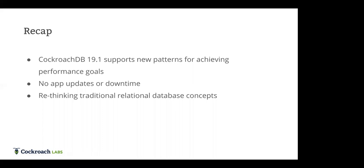To recap: with CockroachDB we have many different patterns for getting the performance and resiliency goals that you care about, and with 19.1 we've added features to the cost-based optimizer to unlock even new patterns. This happened with no application updates and absolutely no downtime. CockroachDB has two relevant capabilities here: no-downtime schema changes — letting us create indices online — and no single point of failure, so you never need to bring your app offline for upgrades.